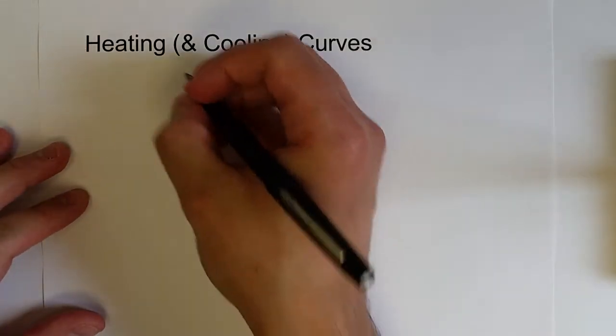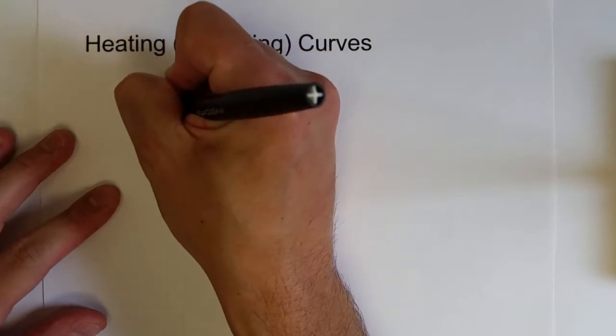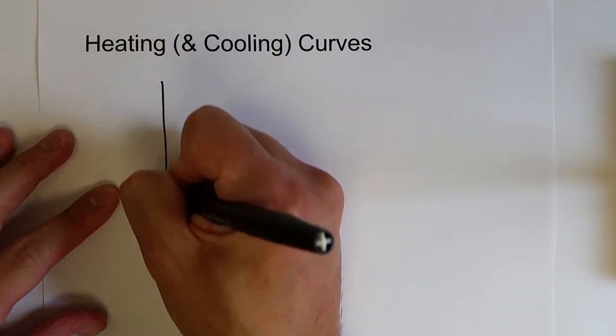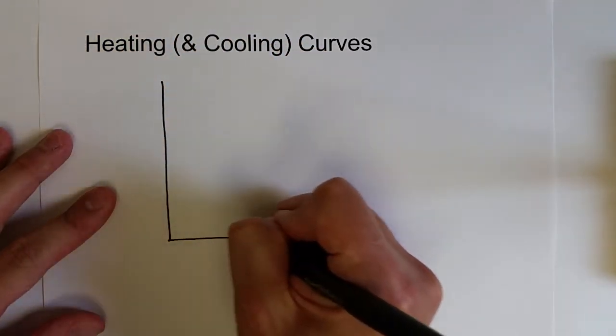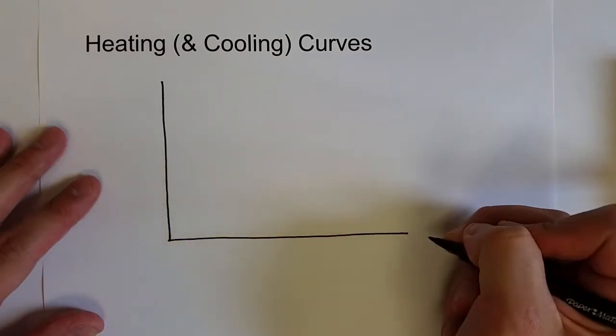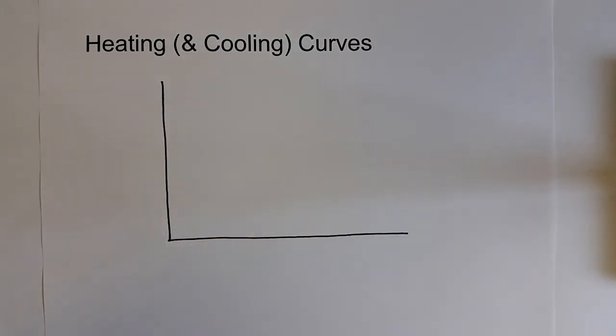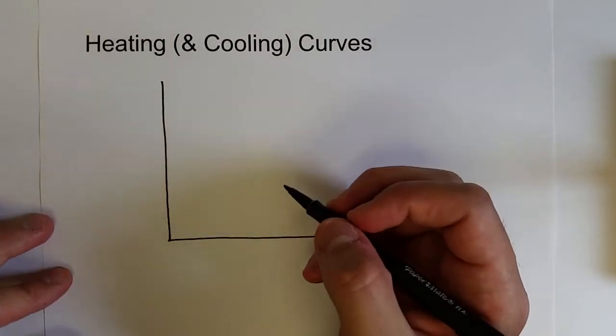Anytime a substance changes phase, if it is a physical change, it is going to involve energy. A convenient way to talk about the energy changes involved in physical changes for a substance is to look at what are known as heating curves and cooling curves.